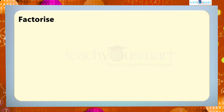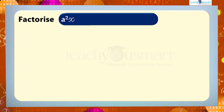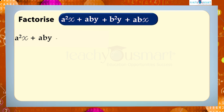Let's do another example. Factorize a²x + aby + b²y + abx. The given expression is a²x + aby + b²y + abx. Clearly, we can say that there is no single common factor for these four terms.